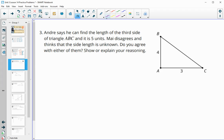Number three, Andre says that he can find the length of the third side in triangle ABC, and he says that it is five units. Mai disagrees and she thinks that the length of the segment is unknown. So it would be five units if we knew that this was a right angle. We need to know that this is a 90-degree angle, and without that, then this is an unknown segment. If this were a 90-degree angle, then we would be able to do Pythagorean theorem. Without the 90-degree angle, we can't do anything. So agree with Mai.